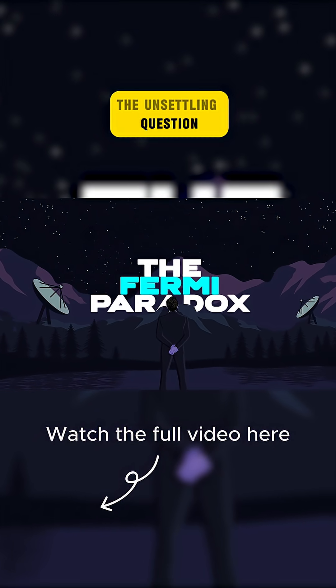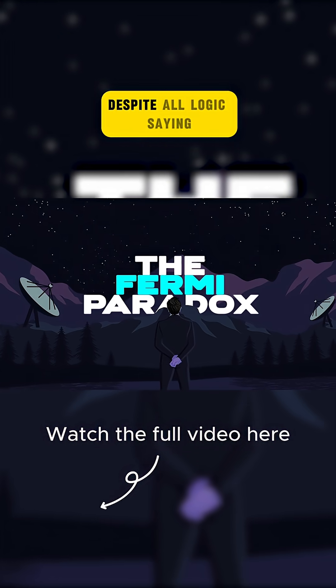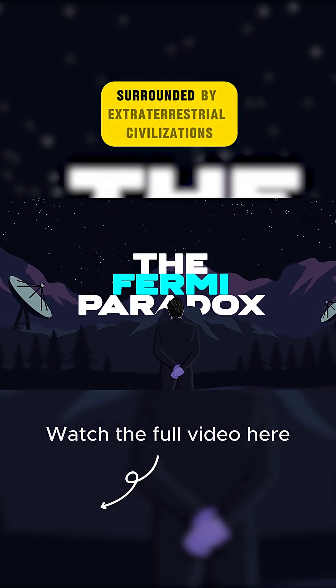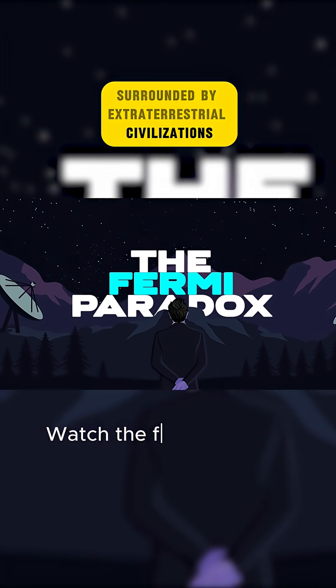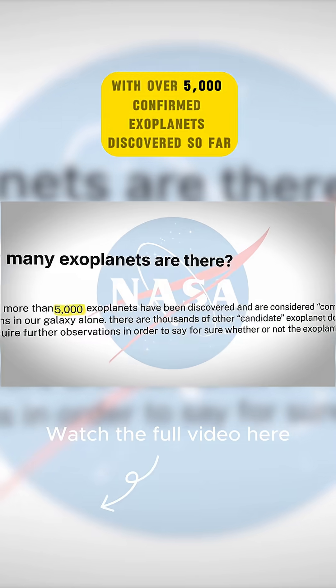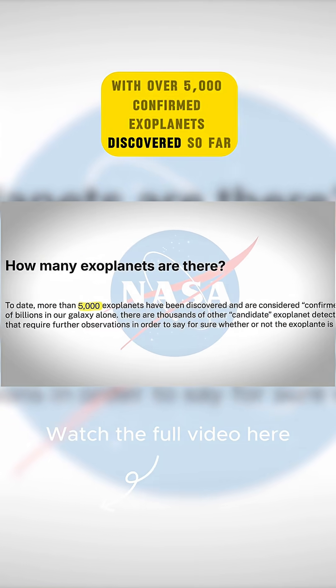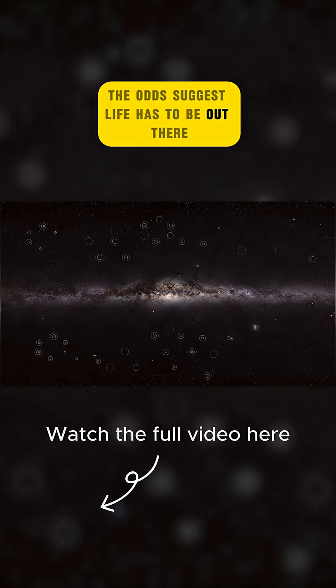The unsettling question of why do we appear to be completely alone, despite all logic saying we should be surrounded by extraterrestrial civilizations. Because with over 5,000 confirmed exoplanets discovered so far, the odds suggest life has to be out there.